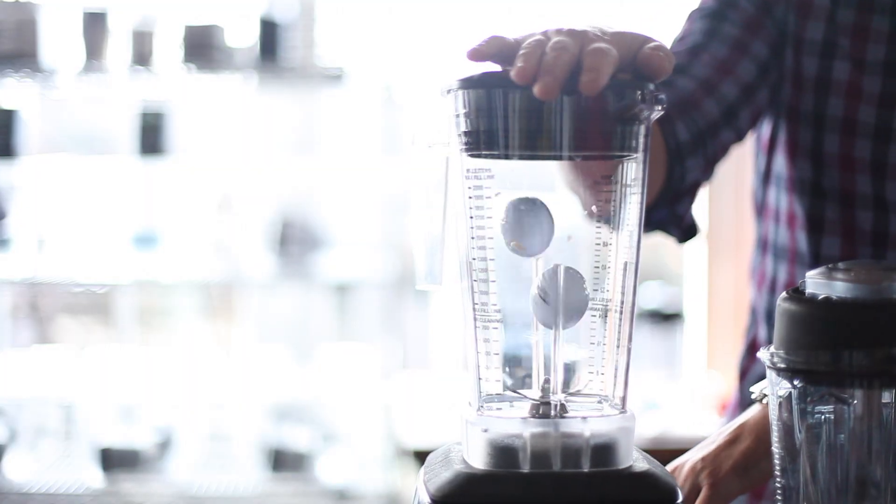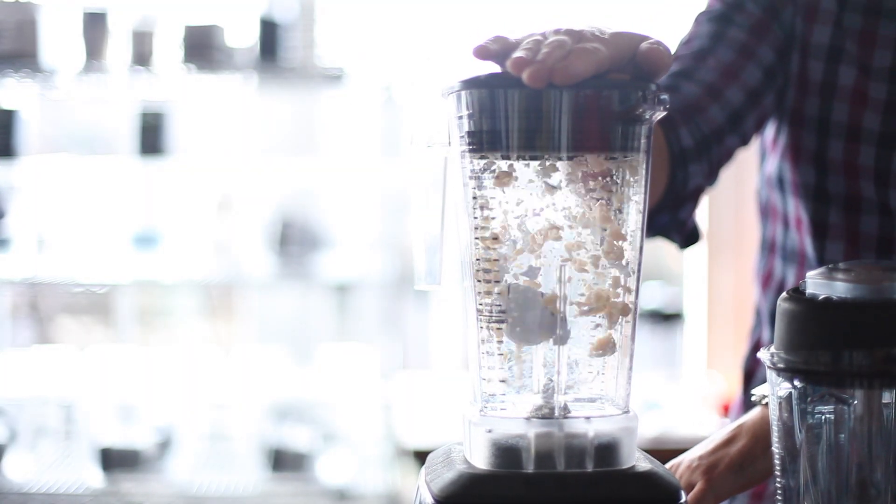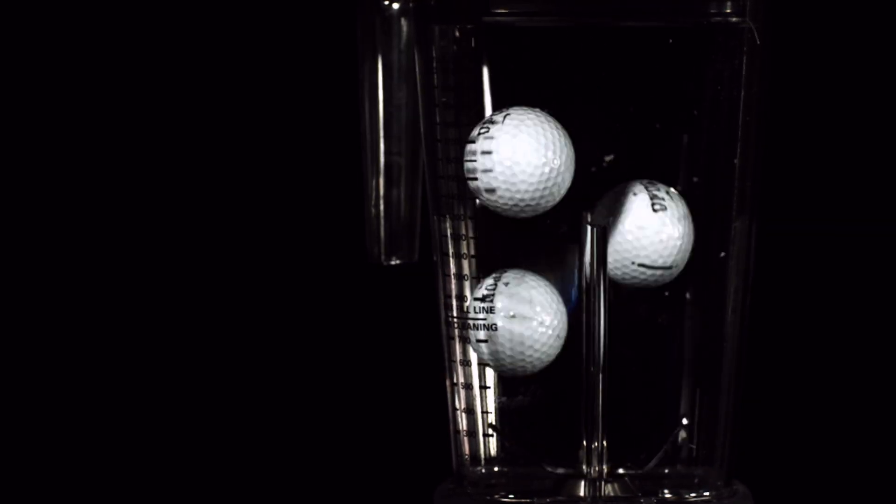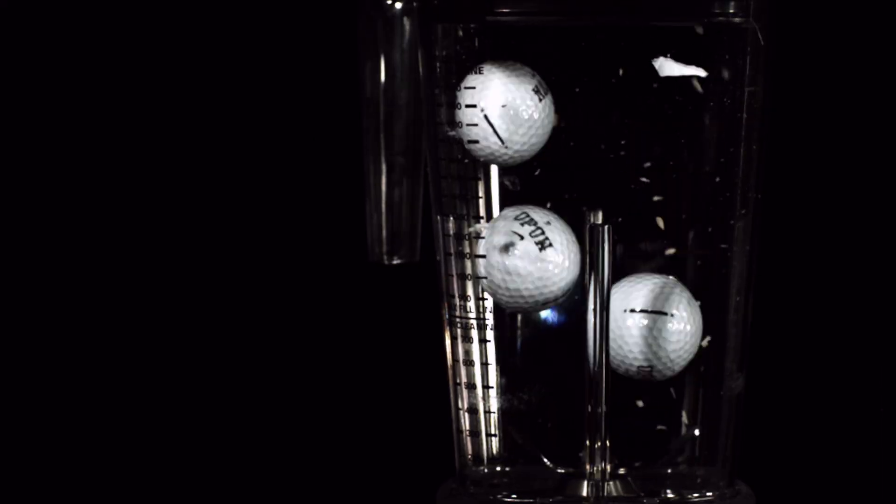Even a fistful of golf balls can be quickly cut into bits, but at some point, the pieces don't become any smaller for two reasons. As they shrink in size, the chance that the blades will hit them decreases. They've simply become too small a target.